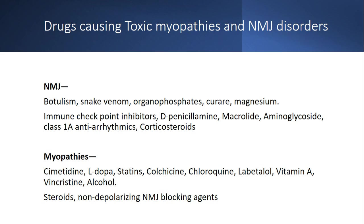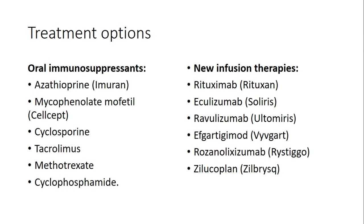The treatment field for myasthenia gravis has recently expanded significantly, with many new therapies coming to market. Beyond traditional oral immunosuppressants, there are new infusion therapies. Two newer drugs — rozanolixizumab and zilucoplan — are subcutaneous, so after the first supervised injection, patients can self-administer at home for added convenience.